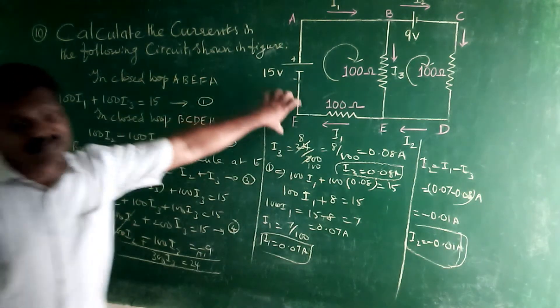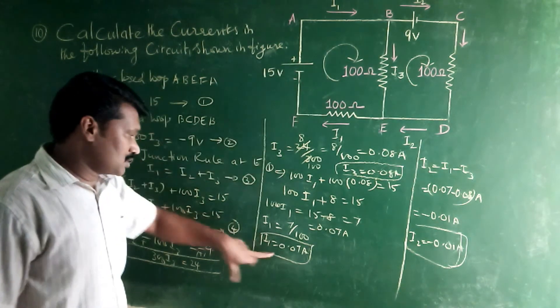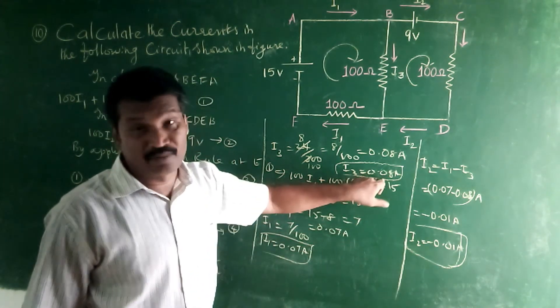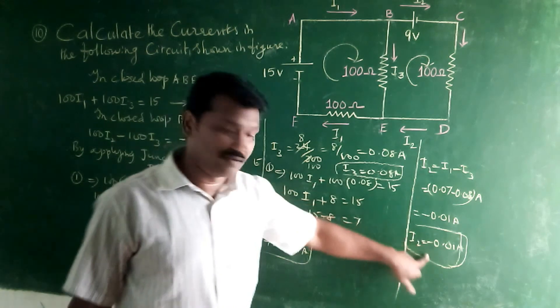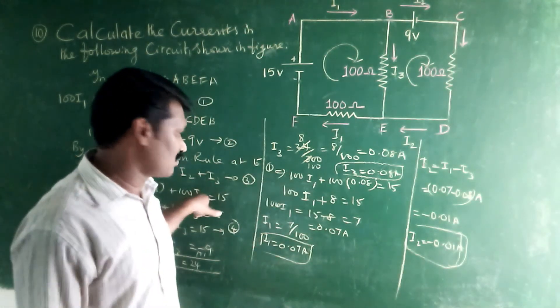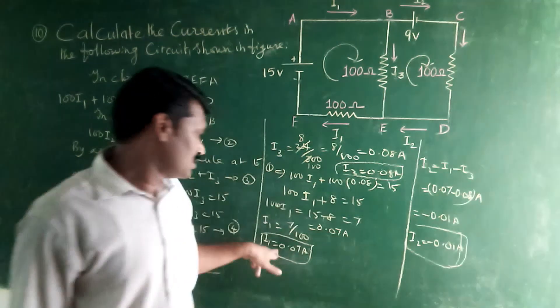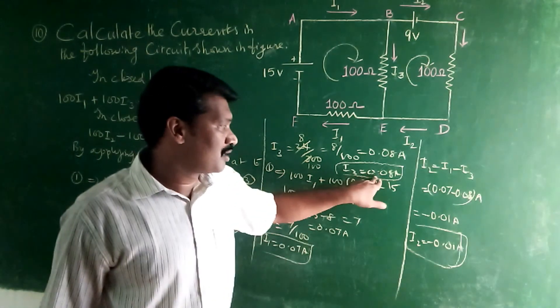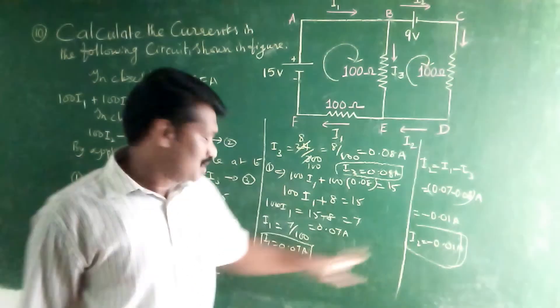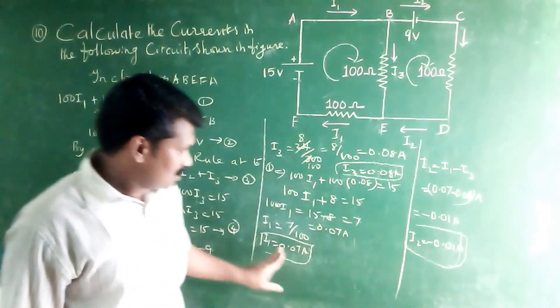So according to the given circuit, we applied both Kirchhoff's first rule and second rule. I1 is equal to 0.07 ampere, I3 is equal to 0.08 ampere, I2 is equal to minus 0.01 ampere.